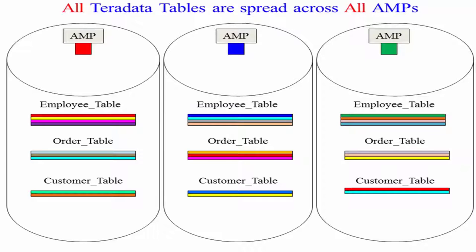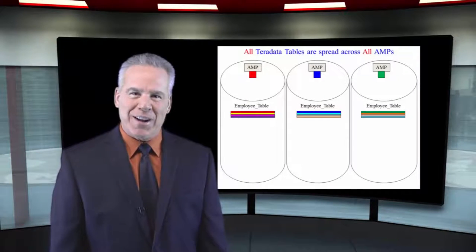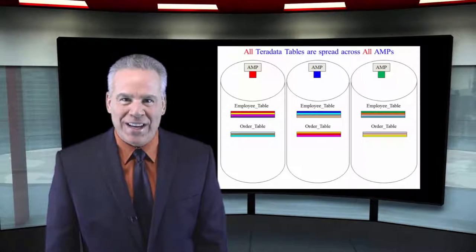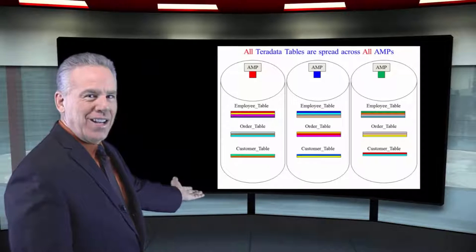Here's a perfect picture for you. As you can see on my three AMPs, this time I've laid out three tables. Our first table has got four rows on each AMP. The next table has got three rows on each AMP. And of course, our smaller table has two rows on each AMP.